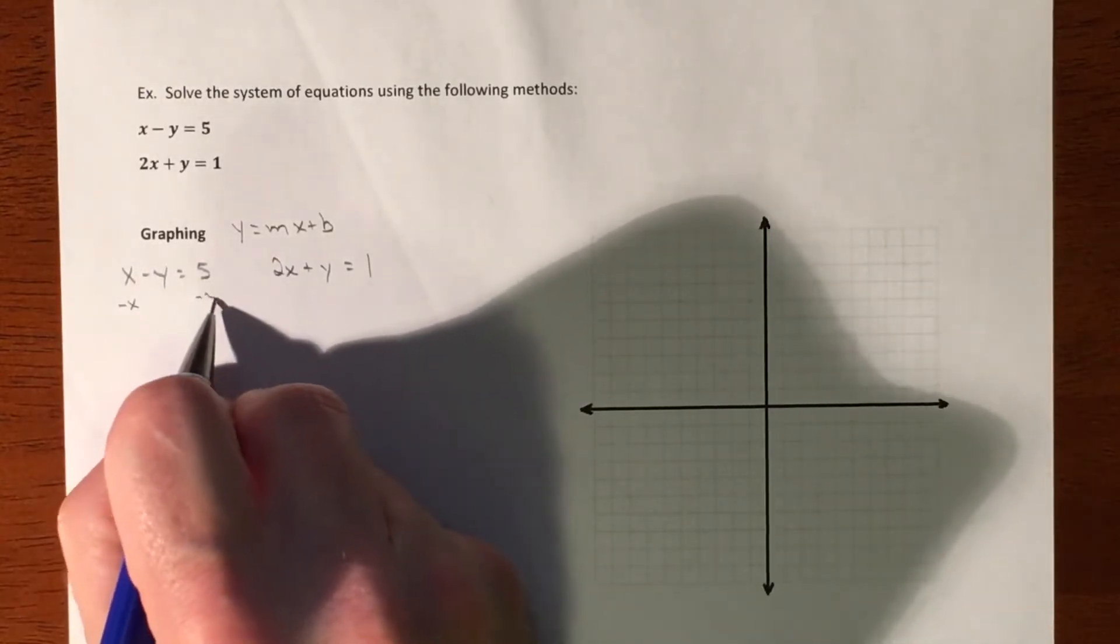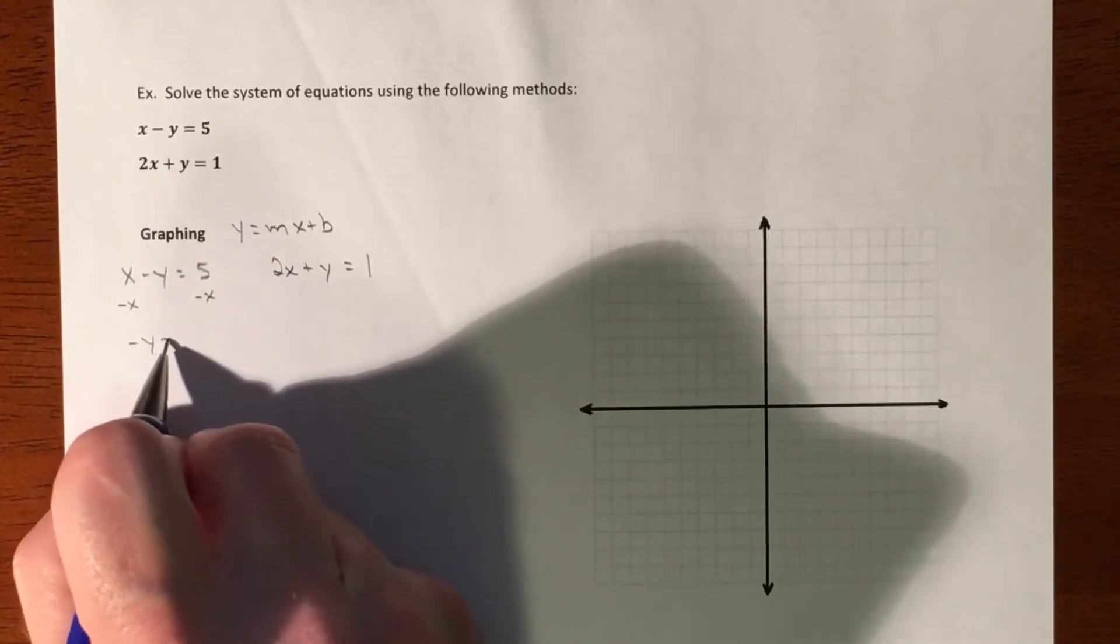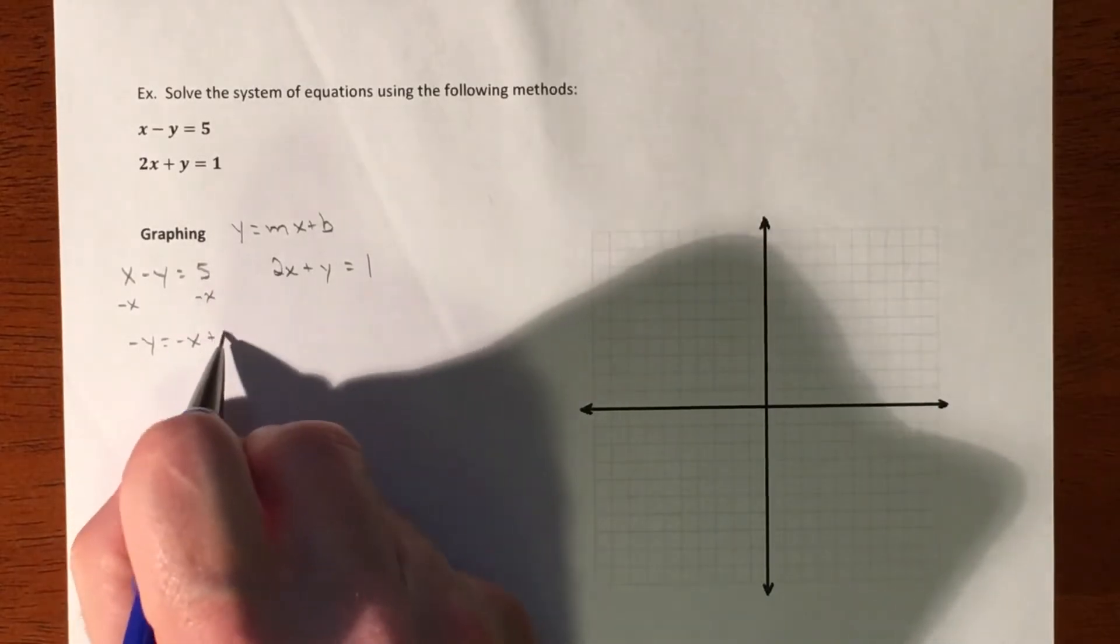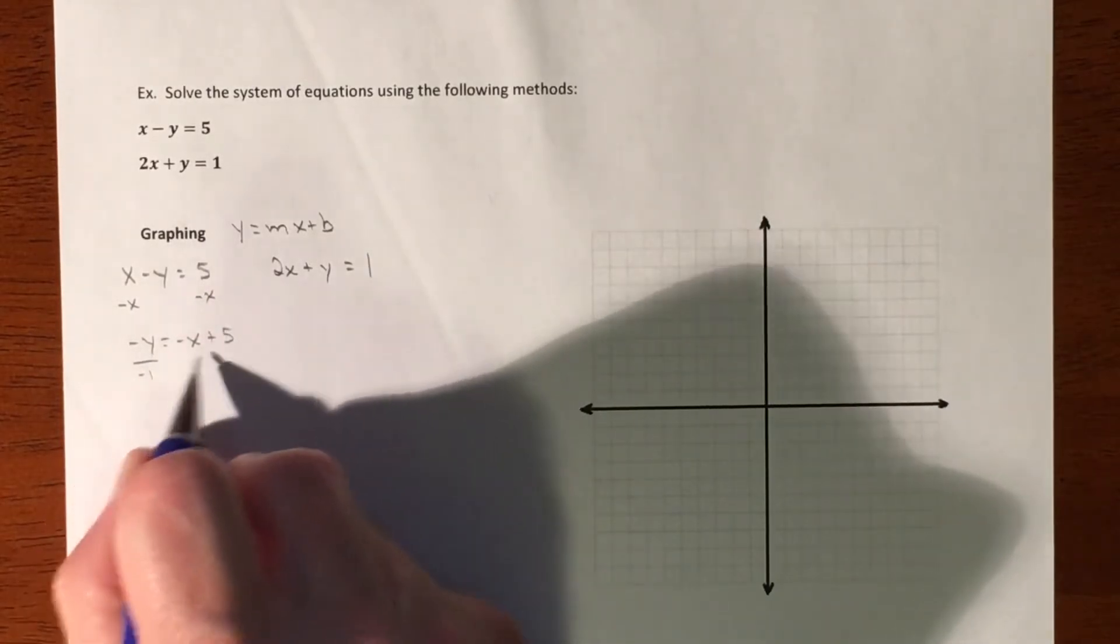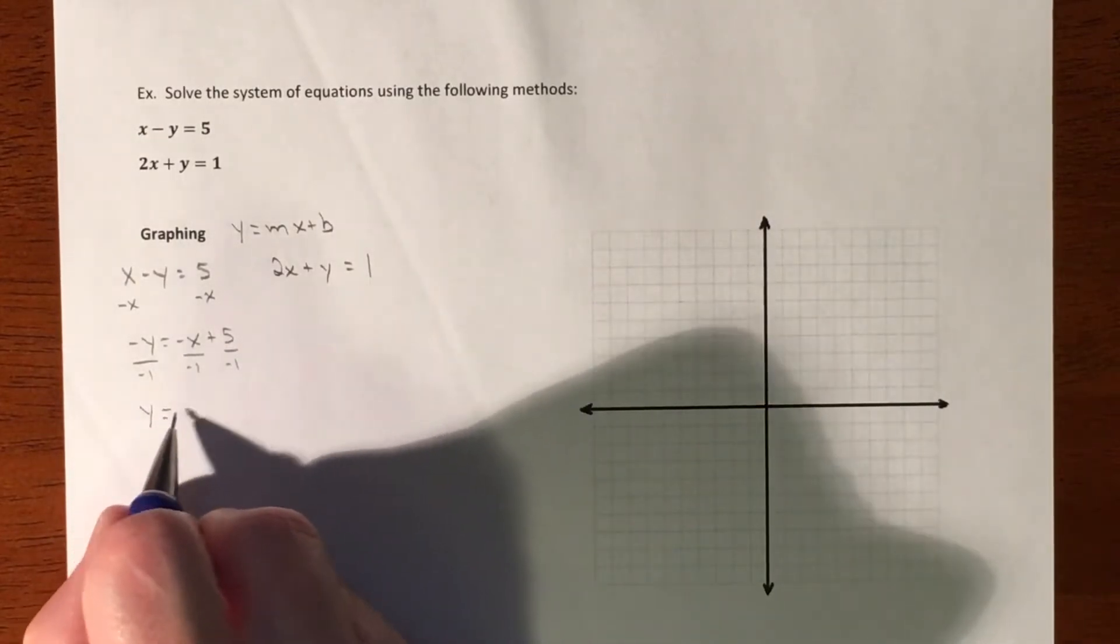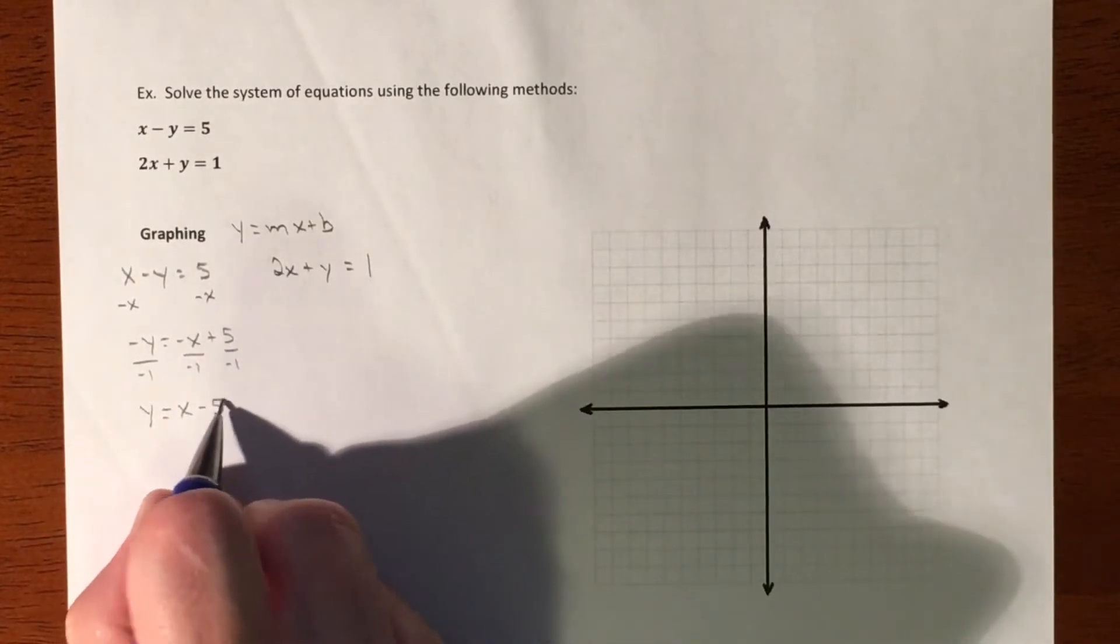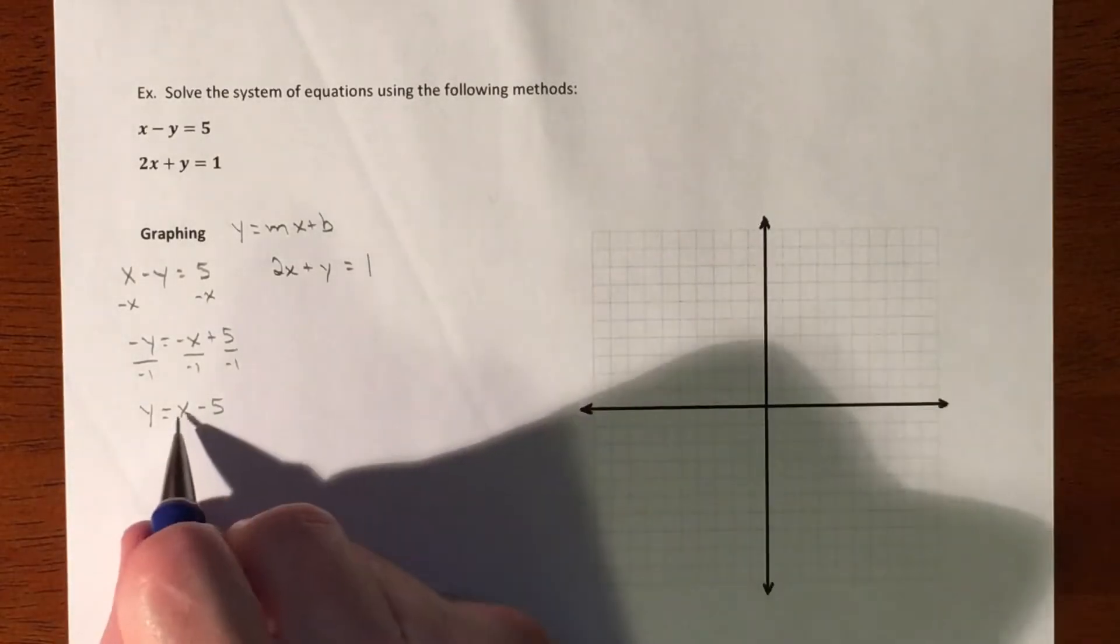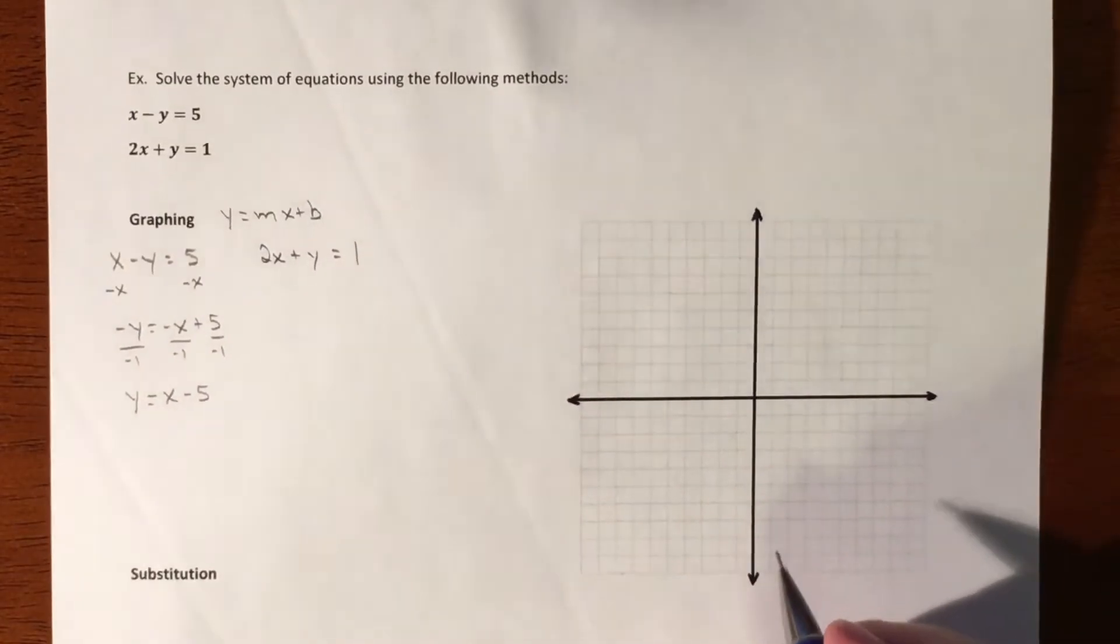We're going to subtract the x over, and we'll have a negative y equaling a negative x plus 5. Divide everything by negative 1, so y equals x minus 5. Alright, so we'll graph that one. This graph's going to go up. I have a y-intercept at negative 5.